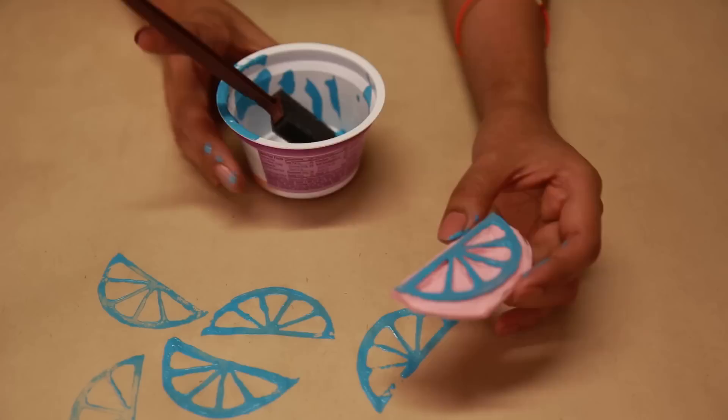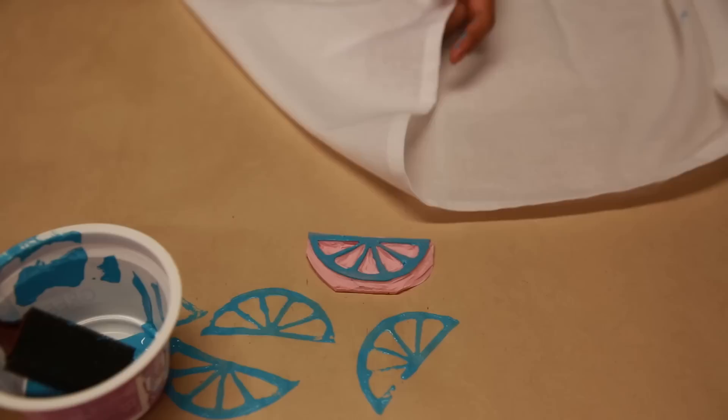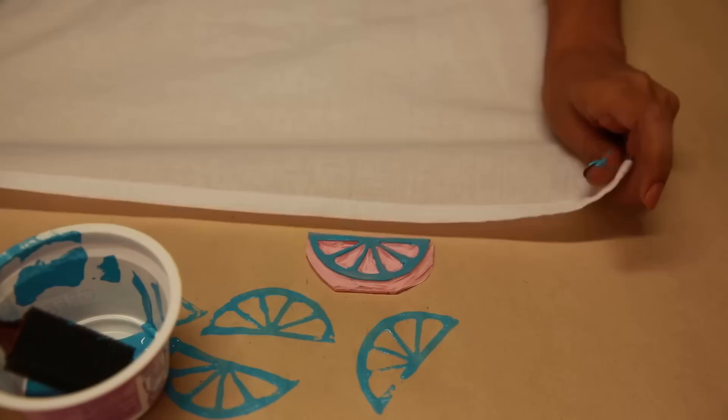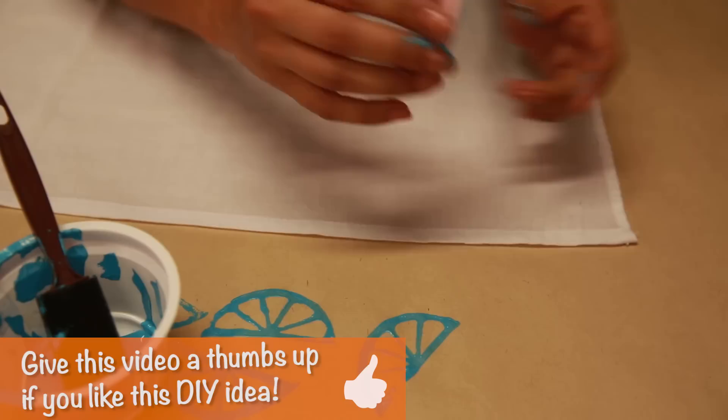And then you just want to practice on a piece of paper. So after you've practiced a few times and you have your design down, go ahead and get out your towel or whatever fabric you want to use. You can put it on a tote bag. You can put it on just about anything as long as you use fabric paint.